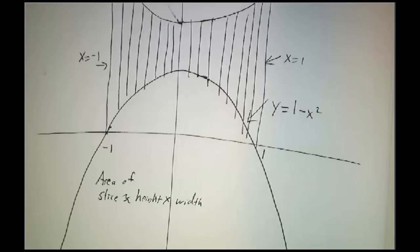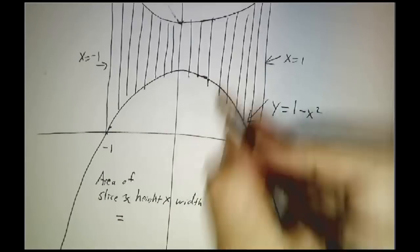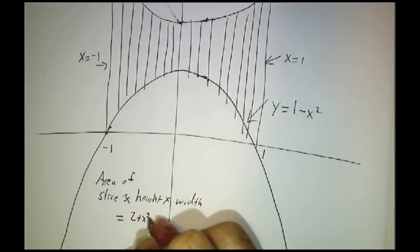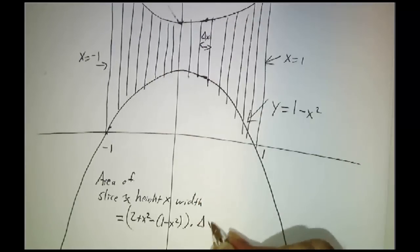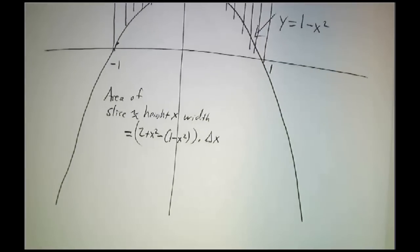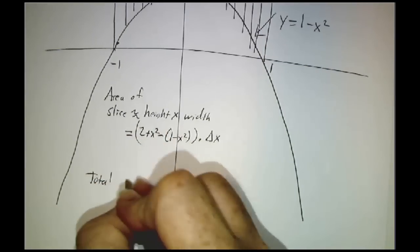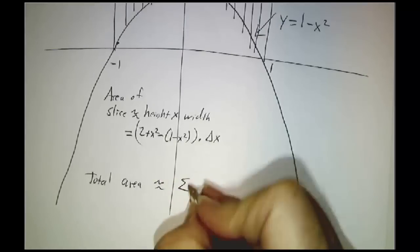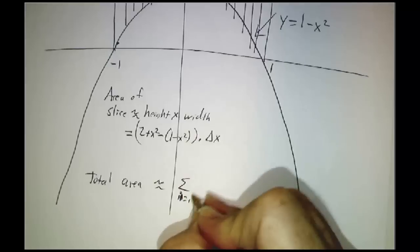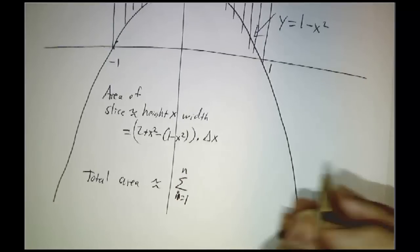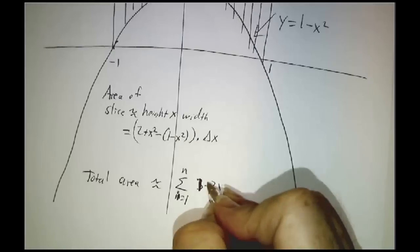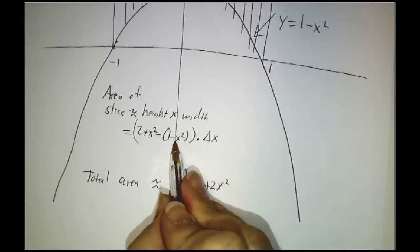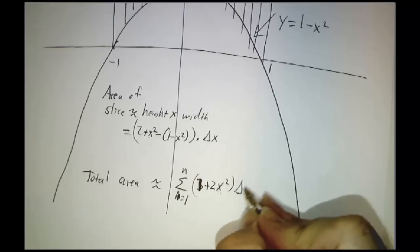So to get the height, you take 2 plus x squared minus 1 minus x squared. That's the height. And the width, we'll call the width delta x. So the total area is approximately the sum of all the n different slices of 1 minus 2x squared plus 2x squared plus x squared minus negative x squared gives you 2x squared, 1 plus 2x squared times delta x.